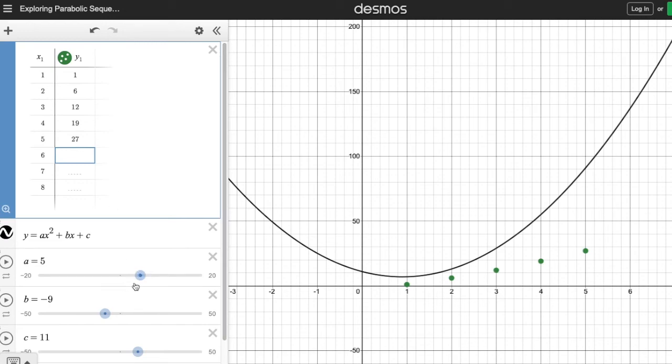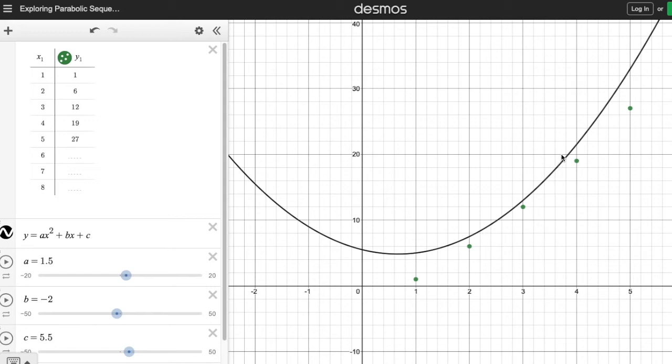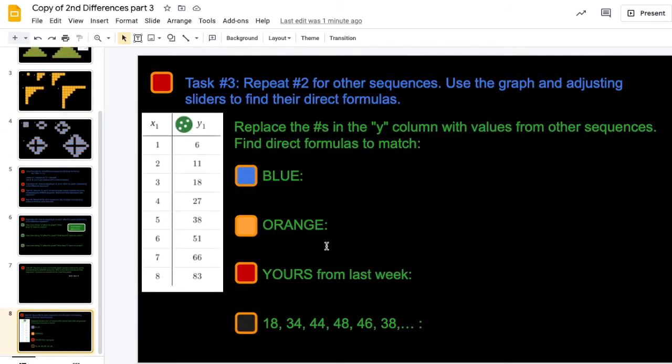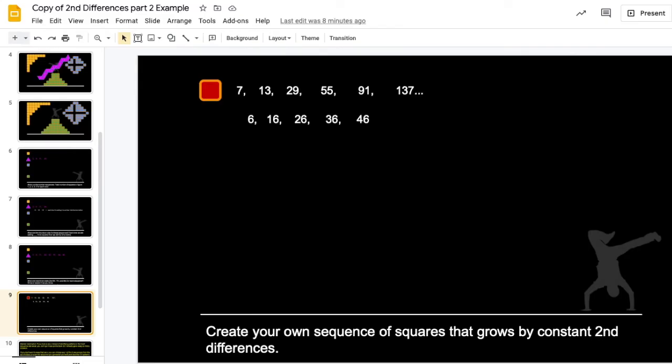Okay? And then you'll do the same thing again. Slide these guys, see if you can get your curve to line up perfectly with the points. When you feel like you've gotten it as close as you can get it, you're going to give me the formula. All right? Formula for the orange one. And then again, come in here, delete these out, put your blue sequence in there, give me a formula for that, by again, getting the curve to line up with the points, and so on.